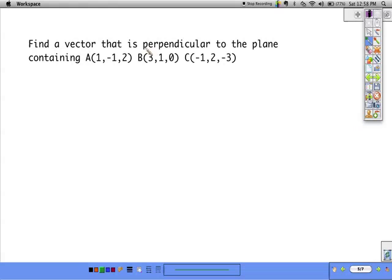So, we want to find a vector that's perpendicular to the plane containing these three points. If I can find two vectors in the plane, I can take their cross product, and that will give me the perpendicular vector to those two.